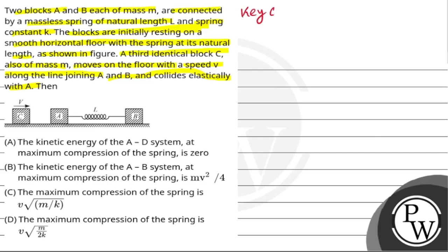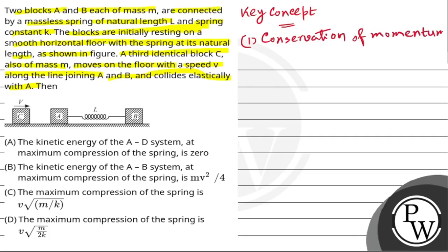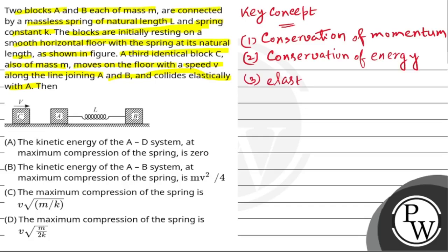First we need to know the key concepts: conservation of momentum — when there are no external forces applied, the total momentum of a system remains conserved, i.e., momentum before and after collision remains the same. Second is conservation of energy — total energy of an isolated system remains conserved. Lastly, elastic potential energy of a spring equals half k x², where k is the spring constant and x is the compression.